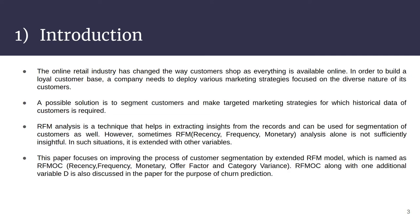The major properties taken into consideration for segmentation are Recency, Frequency, and Monetary Value. But sometimes these insights are not sufficient enough to satisfy the use case, and that's where the core idea of the paper comes in. The paper focuses on improving customer segmentation by extending the RFM model into RFM OC, which uses two additional variables: Offer Factor and Category Variance. RFM OC is also used for churn prediction along with one additional variable D, which will be discussed later.